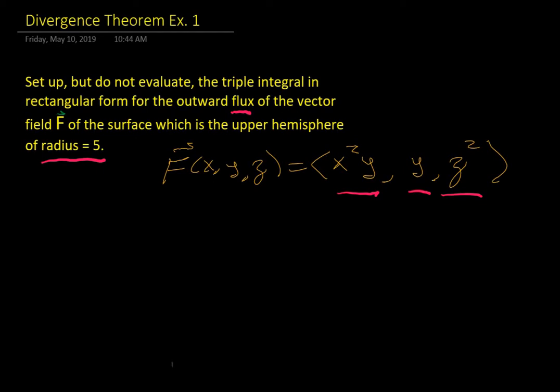instead of looking at the top part of the hemisphere and the xy plane where it hits, so here's our sphere of radius 5 and we're using the upper portion. We're going to use the divergence theorem and not a regular surface integral to evaluate this.